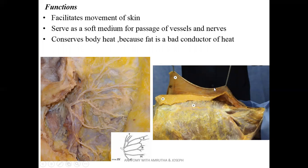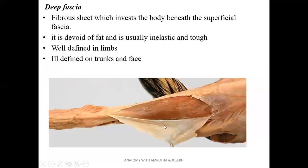In this picture, the skin is reflected. The superficial fascia, shown in yellow, can be seen. Muscles are exposed, and superficial to the muscles there is deep fascia. This area is the chest region. Here, the deep fascia is exposed to show the underlying deep structure — the muscle. Deep fascia is a fibrous sheet that is inelastic and tough.